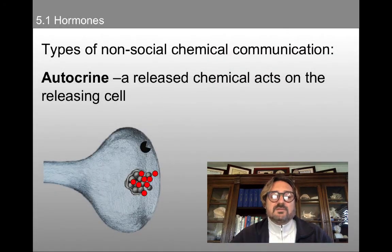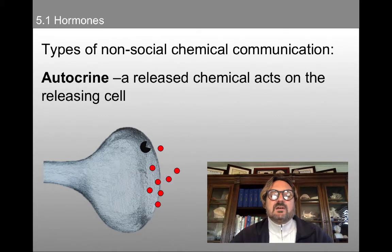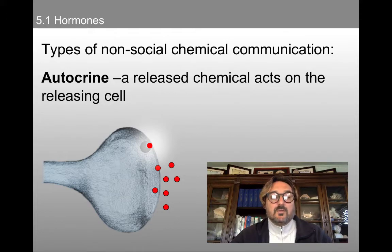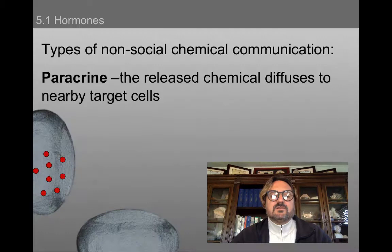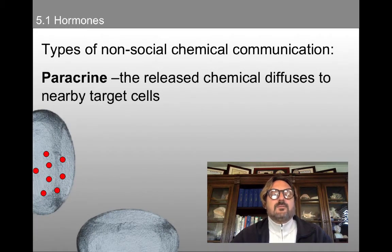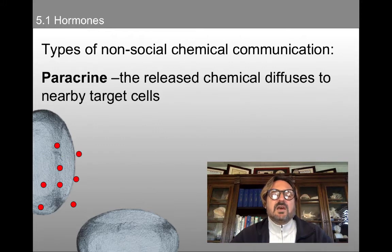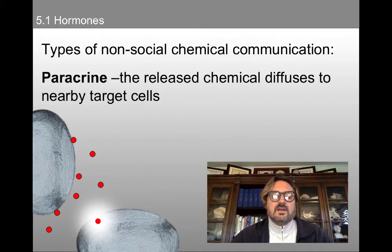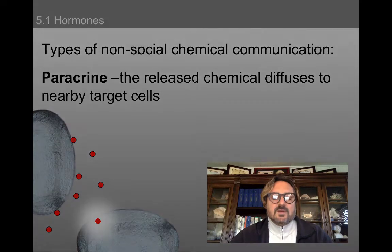Another type of non-social communication is autocrine — it's when a released chemical acts on the releasing cell. So it goes back to the presynaptic membrane and activates, which will actually impact the rate at which that neurotransmitter is released in the future. We also have paracrine communication — that's when the released chemical diffuses to nearby target cells.